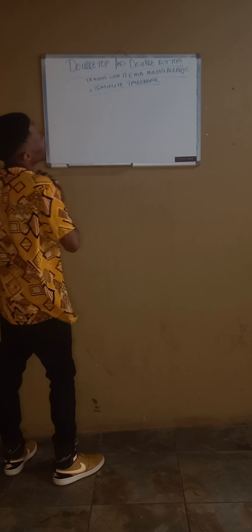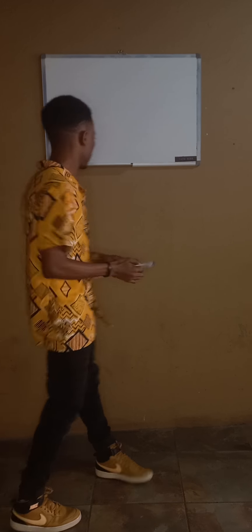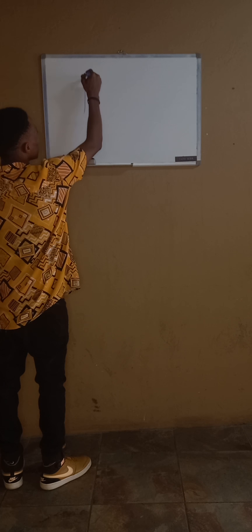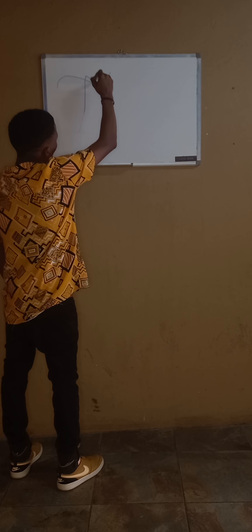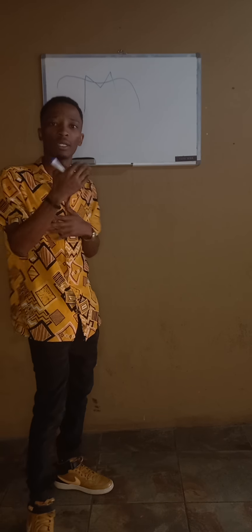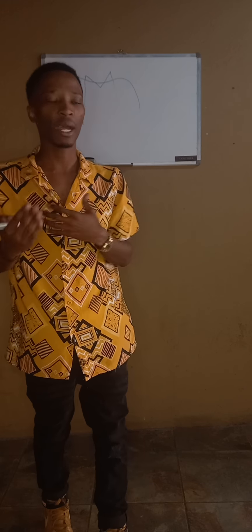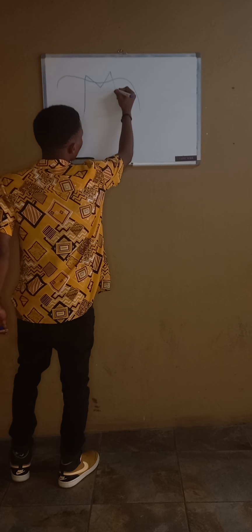Now let's start with the double top. We all know the double top is when you want to sell. When you want to sell, you have to spot a double top formation. The moving average will move in a certain direction, and what we are looking for is three or two touches. When the market reaches the same price or touches many times at the same price, we have to make sure that we spot what is happening.